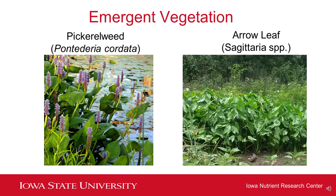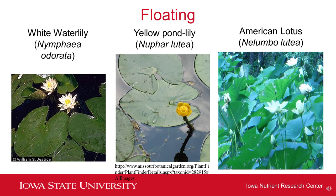Two additional types of emergent plant groups you might add include pickerelweed on the left-hand side, which has very nice purple flower spikes, and arrowleaf on the right — there are a number of different types of arrowleaf found in Iowa and they typically have a pretty white flower. Then getting into floating plants for deeper water areas, you have whitewater lily on the left, yellow pond lily in the middle, and American lotus on the right. Whitewater lily and yellow pond lily are typically smaller and do better in smaller wetland or pond settings, whereas American lotus is a larger plant that needs more room — if you have a larger wetland or pond, American lotus might do better.